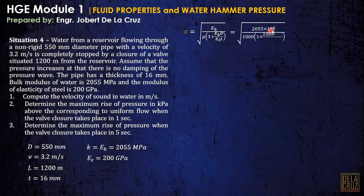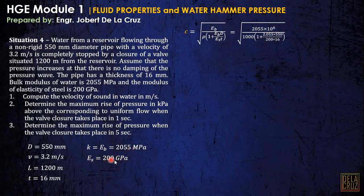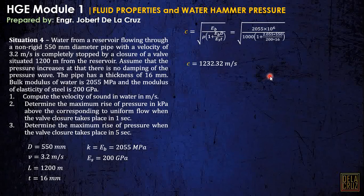Please be consistent with units. EB is in megapascal — always convert to pascal for the numerator (multiply by 10^6). Inside the bracket, the term must be unitless: convert EB to gigapascal (divide by 1000, so 2.055 GPa) and ES is already in GPa, so units cancel. Multiply diameter 550 mm by thickness 16 mm — both in mm, so that ratio is unitless. The resulting celerity is 1232 meters per second.